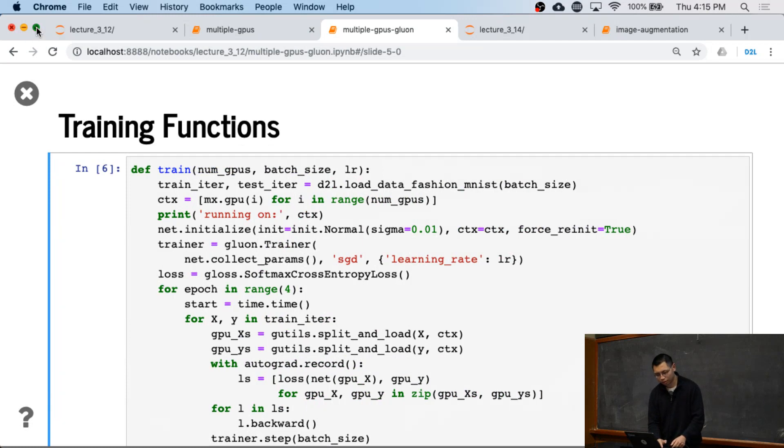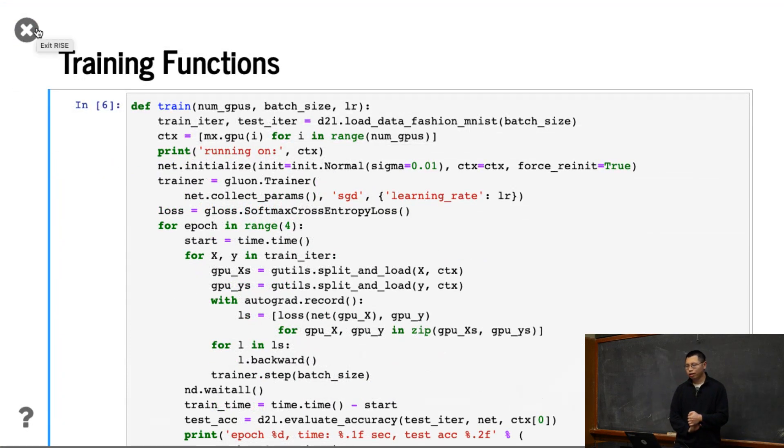And the training function is not different to before. The only thing here, the context, the list of contexts, initialized on multiple GPUs. Here we are using the split load function here. And also for each GPU, iterate on multiple GPUs, compute the forward path, backward path, and step. So the trainer, when you pass the parameter to a trainer, the trainer sees how many devices we have. It's going to automatically do that for you. You don't need to worry about that. So you don't need to do all this copy and all the things and other things.